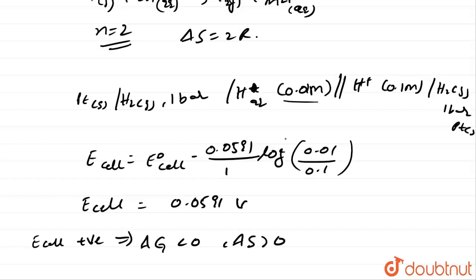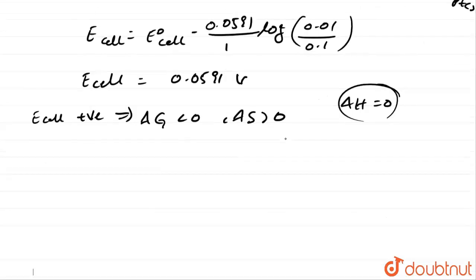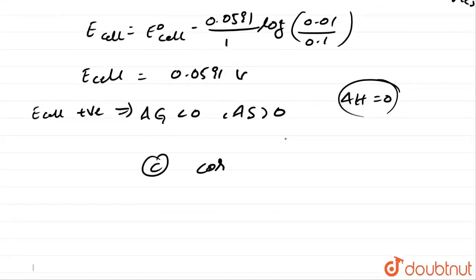As delta S value greater than 0, delta H equal to 0. Delta H equal to 0 for concentration cell. As these are concentration cells given, delta H value will become 0.